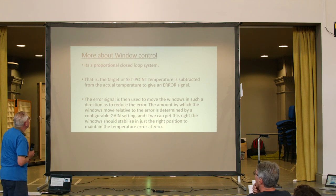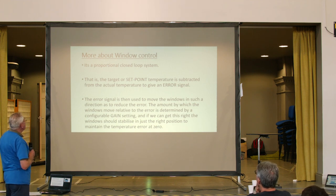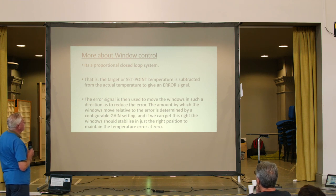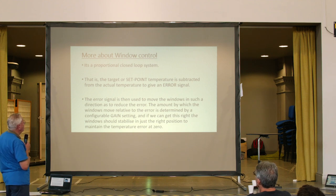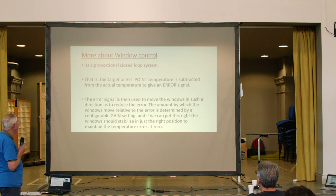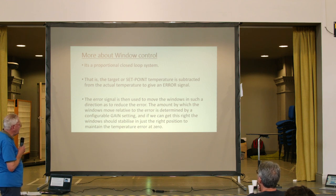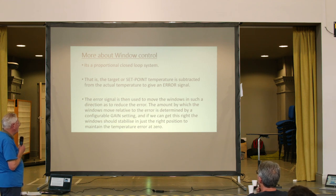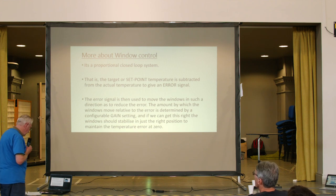Just a bit about window control — it's a proportional closed loop system. It has a target or set point for the temperature, which is subtracted from the actual temperature to give an error signal. The error signal is then used to move the windows in such a direction as to reduce the error. The amount by which the windows move relative to the error is determined by a configurable gain setting, and if we get that right the windows should stabilise in a nice intermediate position with a temperature error at zero.